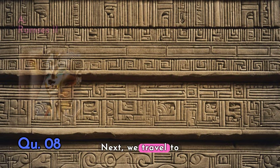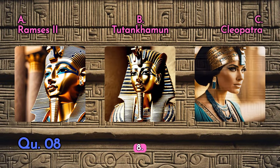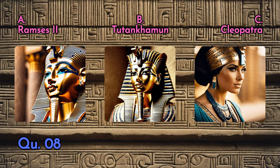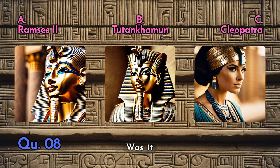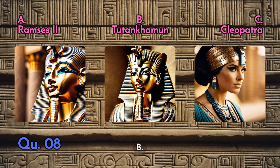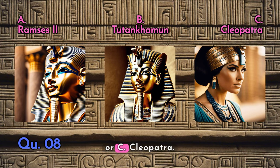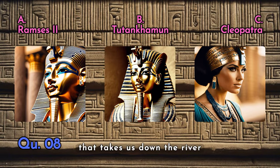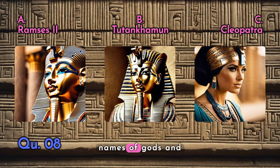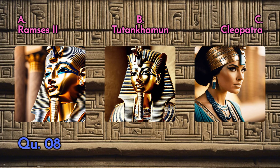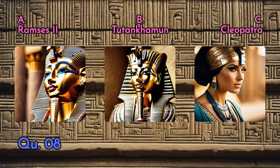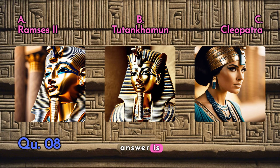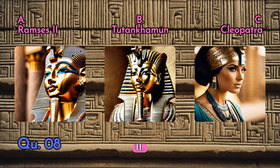Next we travel to ancient Egypt with question eight: who was the longest reigning Pharaoh among the following? A — Ramesses the Second, B — Tutankhamun, or C — Cleopatra. A question that takes us down the River Nile, where history whispers the names of gods and kings. And the answer is A — Ramesses the Second.